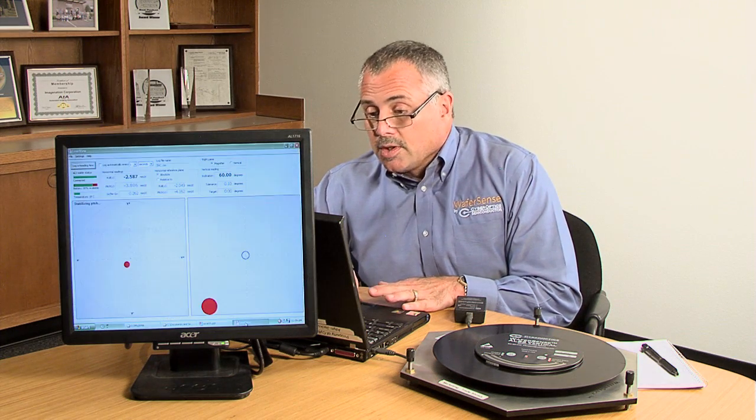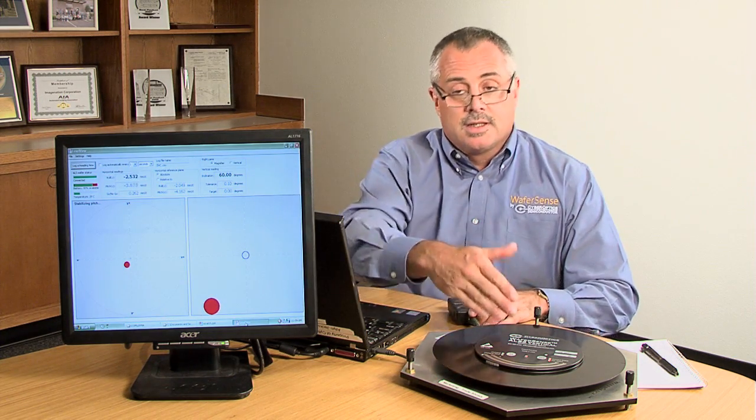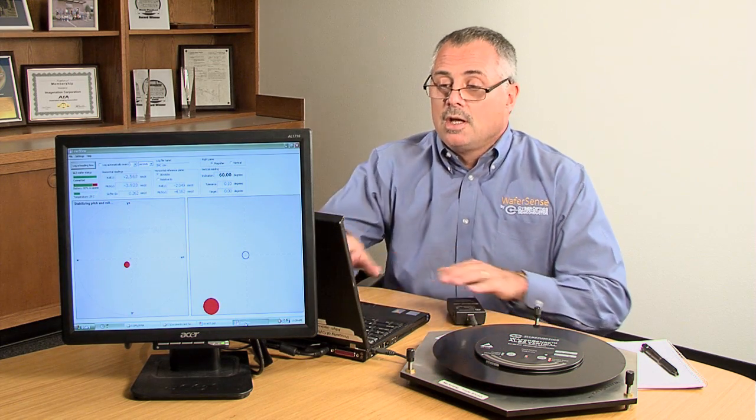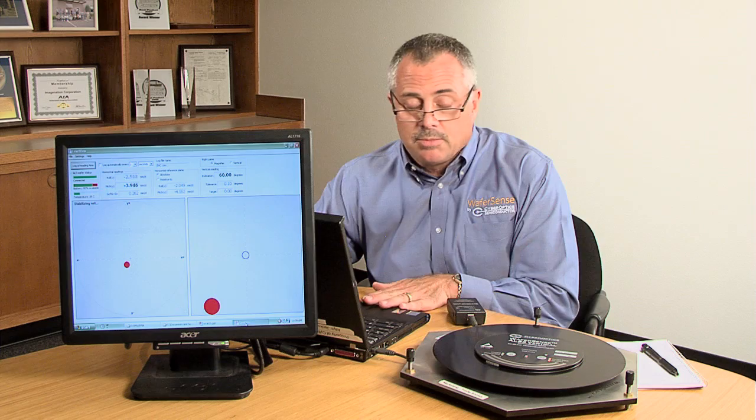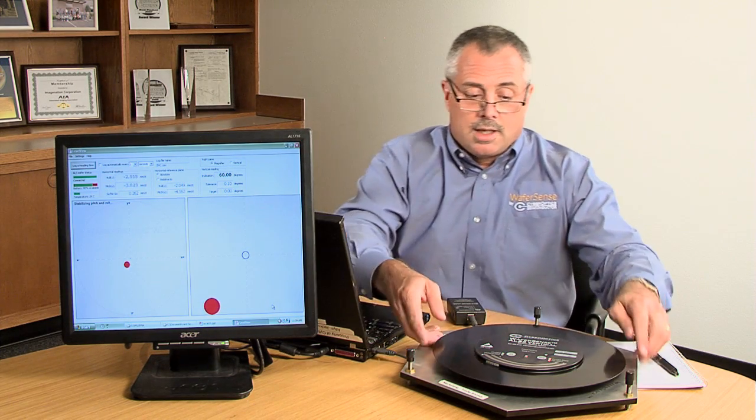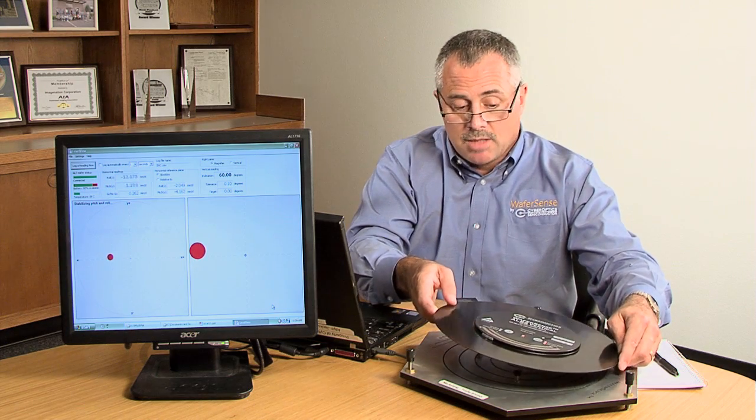To use the ALS you would plug in the link, establish the one-to-one Bluetooth communications, and launch the level view application.